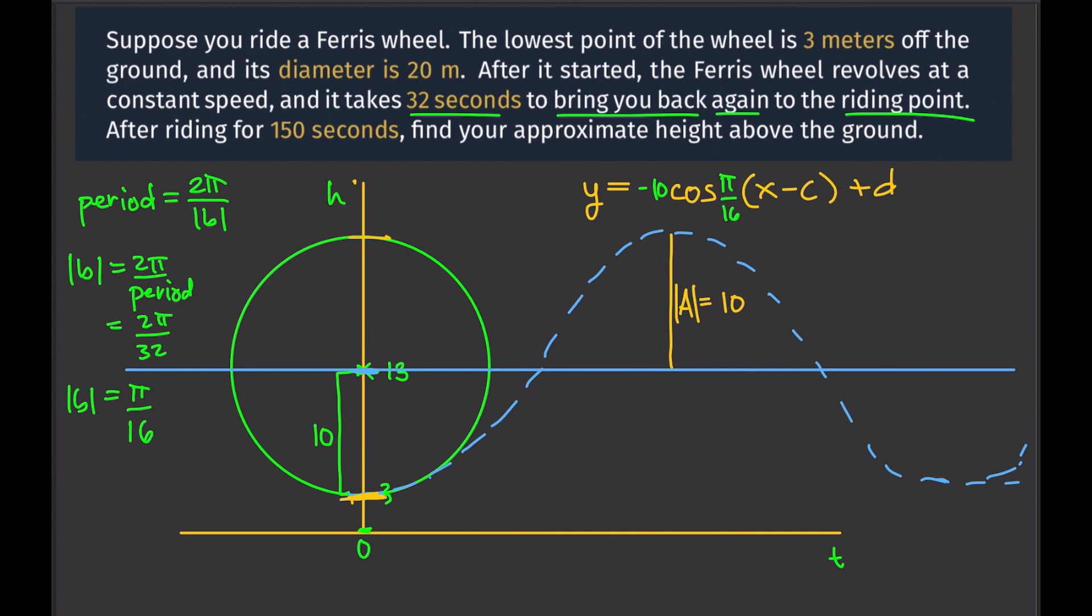Now, what's our C? C is the phase shift. We didn't have a phase shift. So, therefore, C is 0. D is the vertical shift. Remember, we start here but we are here instead. So, therefore, there was a vertical shift of 13 units up. So, that's positive 13. So, we can replace that with positive 13.